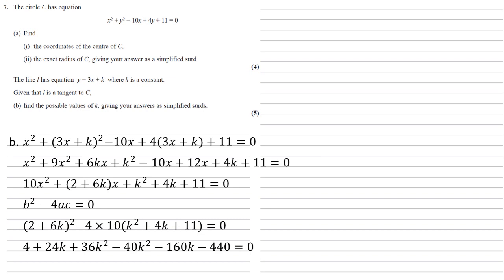Expanding the brackets, we get 4 plus 24k plus 36k squared minus 40k squared minus 160k minus 440 equals 0. This comes together to make minus 4k squared minus 136k minus 436 equals 0.